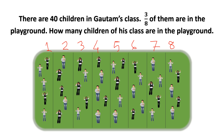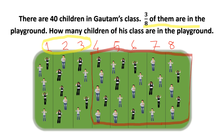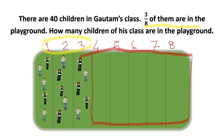But according to our question, all 40 children are not there in the playground. How many children are there? Only 3 by 8 of them. That means out of all these 8 groups, only 3 groups are there in the playground, and the rest are not there. The other 5 groups are not there in the playground, so let us just remove them.